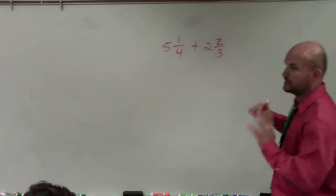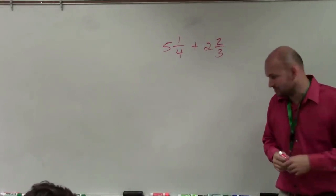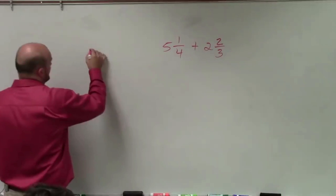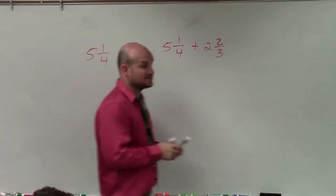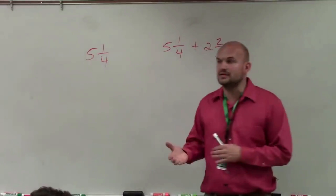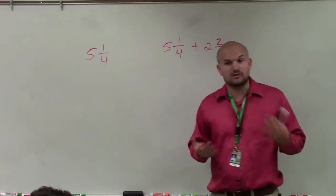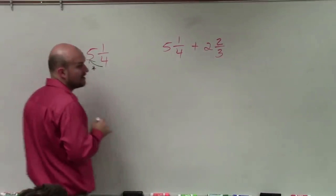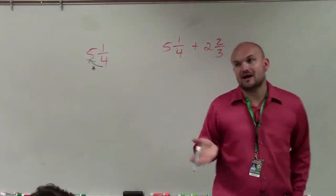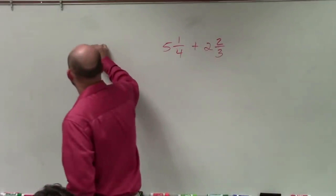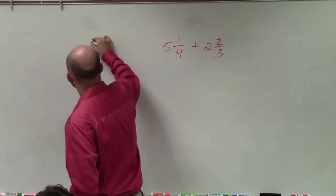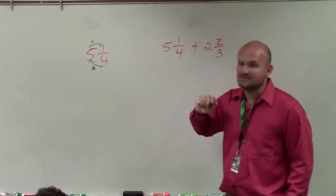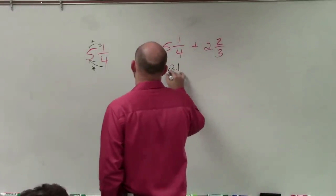Whenever we're adding mixed numbers, we always want to convert them to improper fractions. There's a step-by-step process — we're going to be using this over and over again. To convert a mixed number to an improper fraction, take the denominator and multiply it by your whole value. So 4 times 5 is 20, then add that product to your numerator and keep it over 4. So 4 times 5 is 20, plus 1 is 21 over 4.